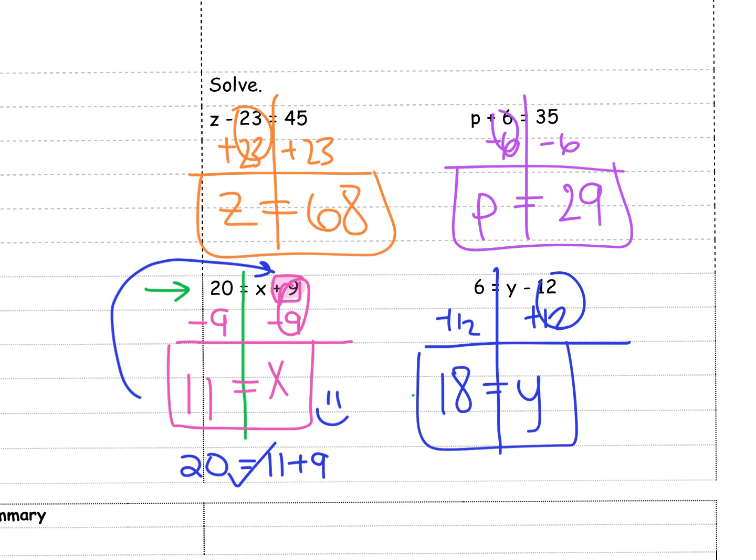If you use the additive inverse correctly, for the first problem, you should have got z equals 68. Second problem, you would have got p equals 29. And the third problem, you should have got y equals 18.